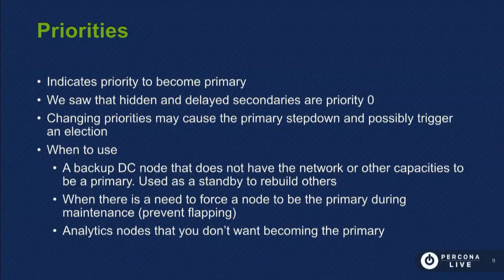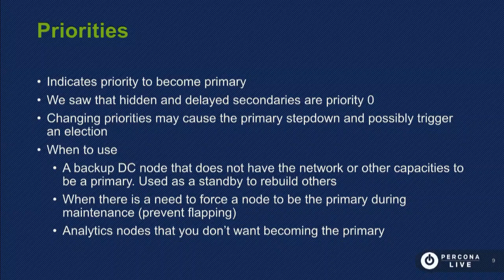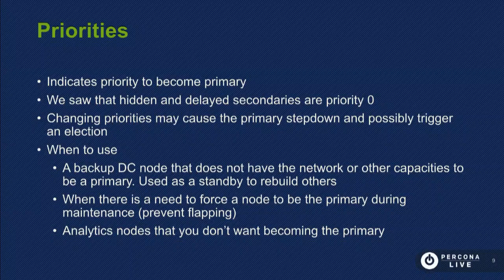When do you use priority-zero members? You use them as a backup node in a data center that you just want as a backup location but doesn't have all the bandwidth and resources your primary DC has. Also use them when you don't want configuration changes — set the priority to zero so it does not change your configuration while you're doing maintenance, preventing flapping. And set it to zero when you want to configure a node as an analytics or reporting node.